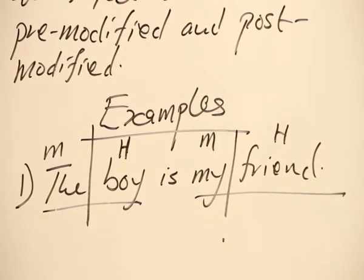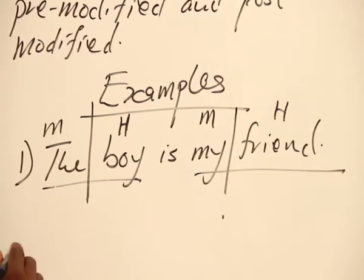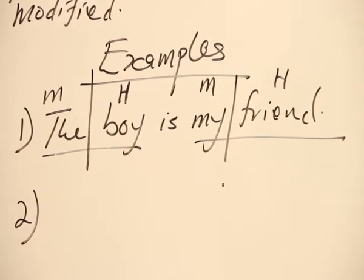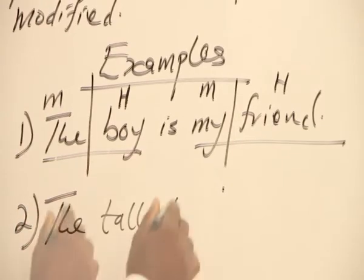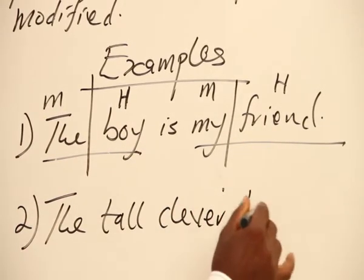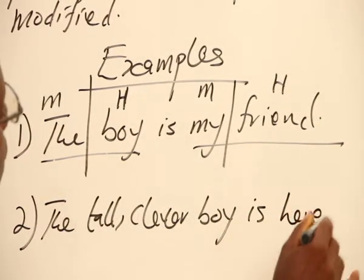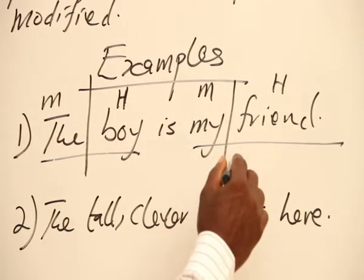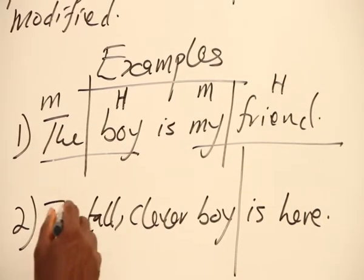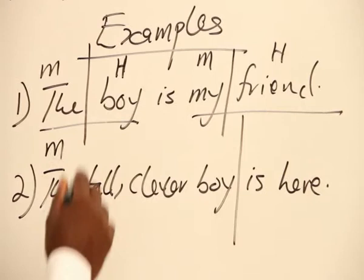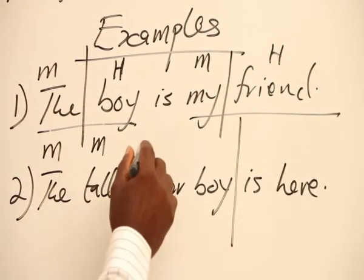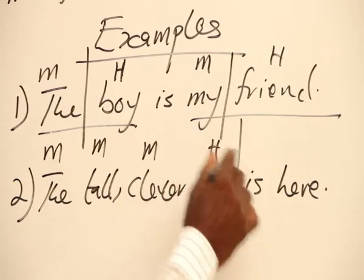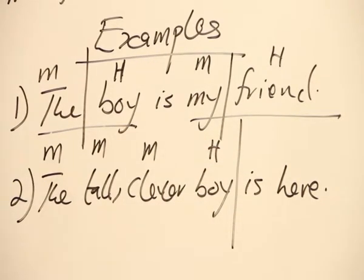Alright? Having looked at that, we can take other examples now to show some level of complexity. Now, we take example two. The tall, clever boy is here. Alright? Now, here we have some level of complexity. But not still so much. Let's take this. Now we have an article, an adjective, an adjective, and then our head. So we have three modifiers coming before the head boy. That is the point.